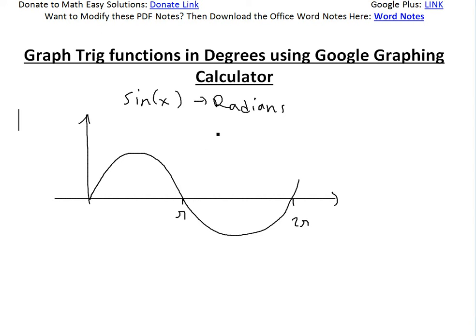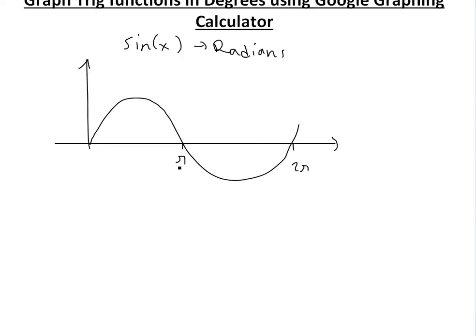But let's say you wanted to graph in degrees. So instead of pi, it should say 180. And then instead of 2 pi, that's going to be 360 right here.